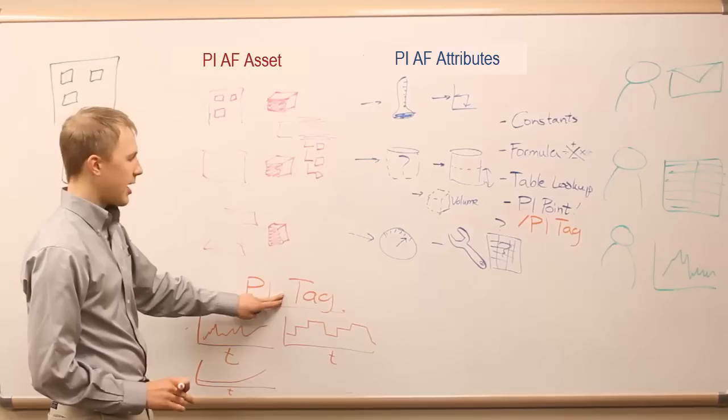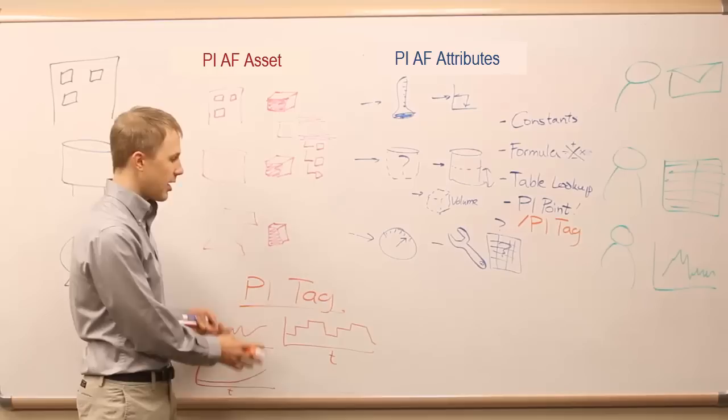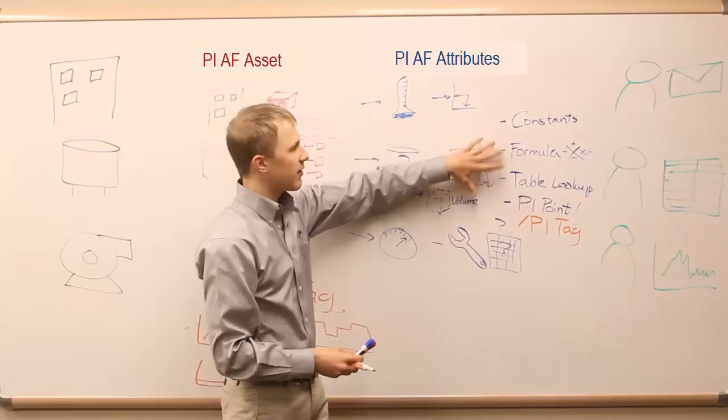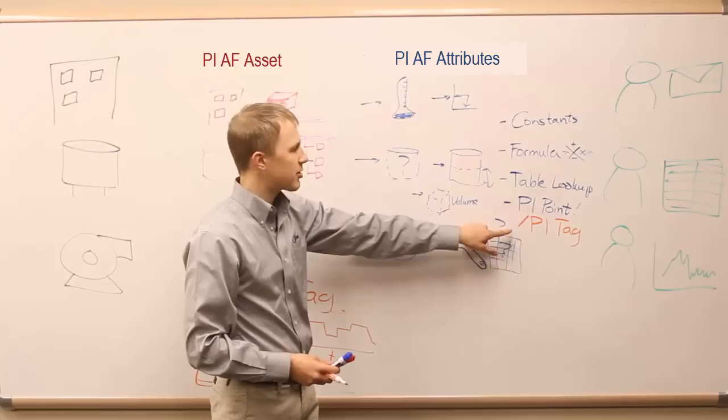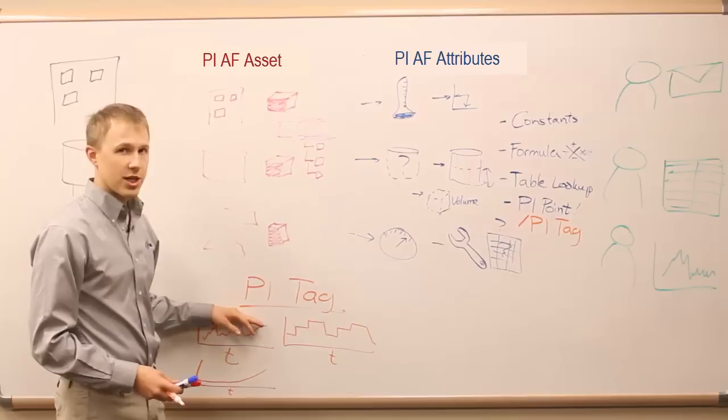PI tags are such a core piece of the PI system. Classically, the PI system was built on PI tags for decades. Now we have attributes to bring in all sorts of other data that isn't time-based - constants don't change over time, so just having PI tags was limiting. But now with PI AF attributes we can include formulas, constants, and table lookups, and we can also bring in data changing against time right here with a PI tag.